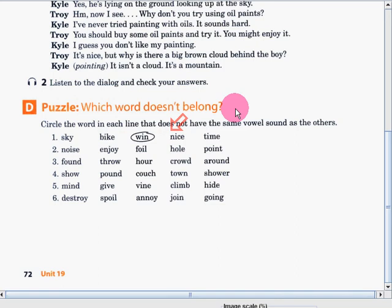Circle the word in each line that you think does not have the same vowel sound as the others. Number one is already done for you. Sky, bike, wind, nice, and time. The word wind does not belong to the group because the rest of the four words has I sound. Now, it's your turn to answer number two to six.